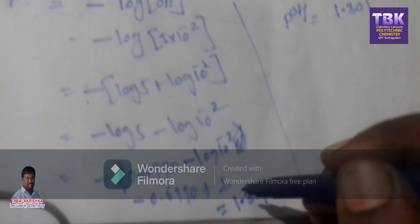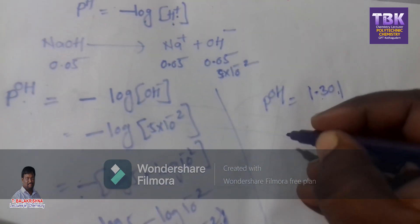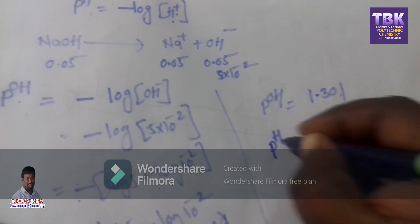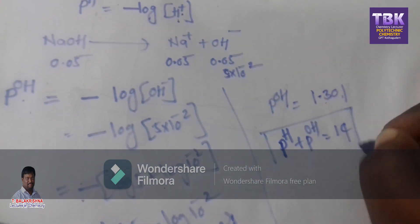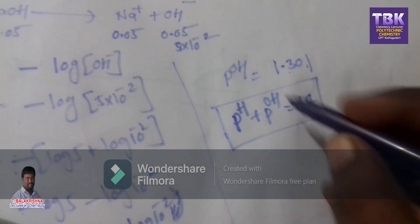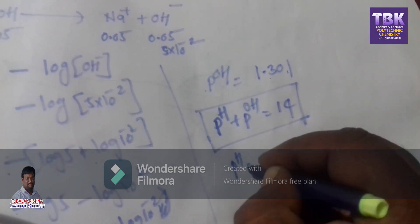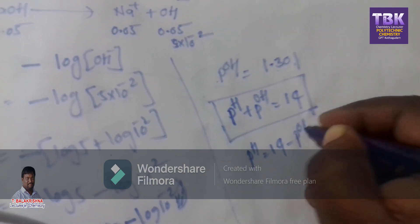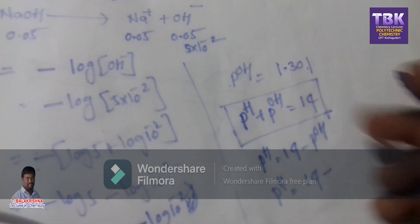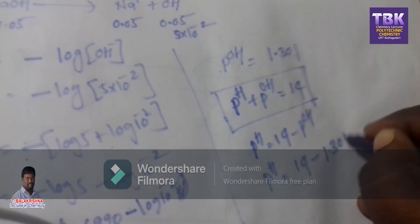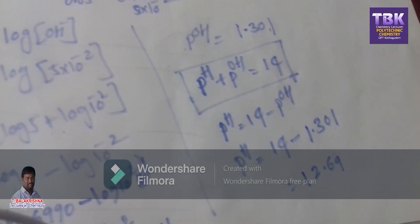The relationship between pH and pOH is: pH + pOH = 14. Using this formula, pH = 14 minus pOH = 14 minus 1.301 = 12.69.